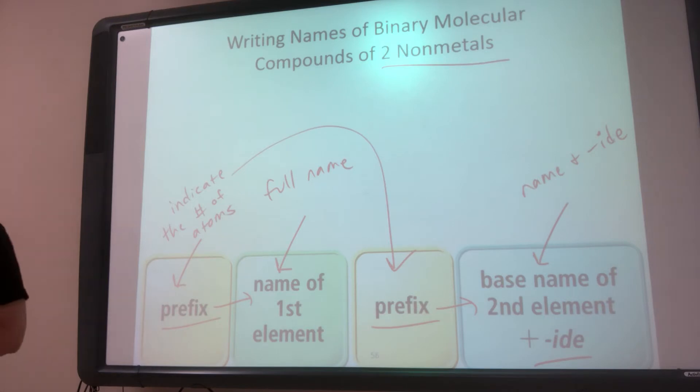Now here's a little exception. If the prefix for the first one is for one, we never use mono, which is the prefix for one, on the first element. So if there's only one for that first element, we don't use the prefix mono.